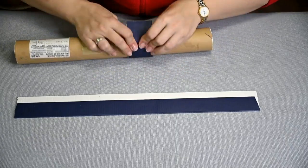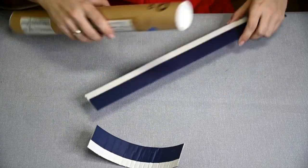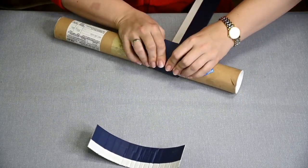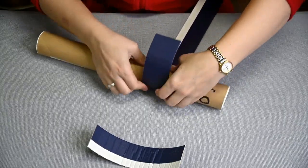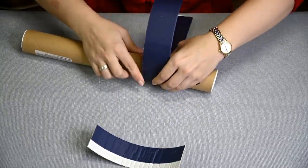When cutting the strip, pay attention to the direction of corrugation on the cardboard. It is to be perpendicular to the strip then it will be easy to shape it into a ring.